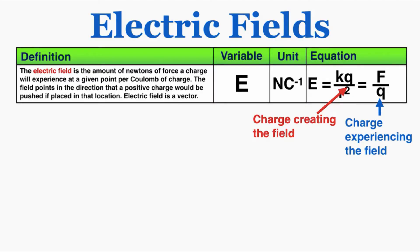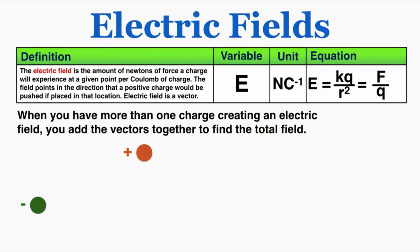Some problems will ask about a field based on the charge creating it, and others will ask about the field based on the charge experiencing it. When you have more than one charge creating an electric field, you can add the vectors together to find the total field. Imagining a positive and negative charge, if we want to know the field strength at a given point, the field points away from the positive and toward the negative, creating two different field vectors. The total field at that point is just the vector sum of those two vectors.